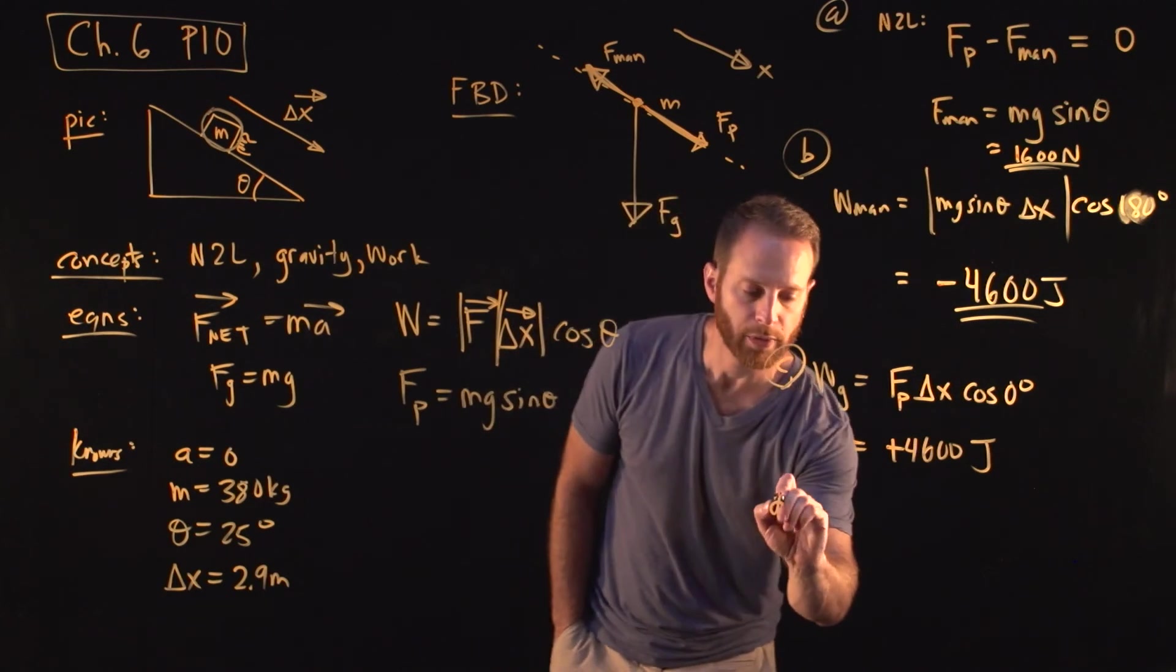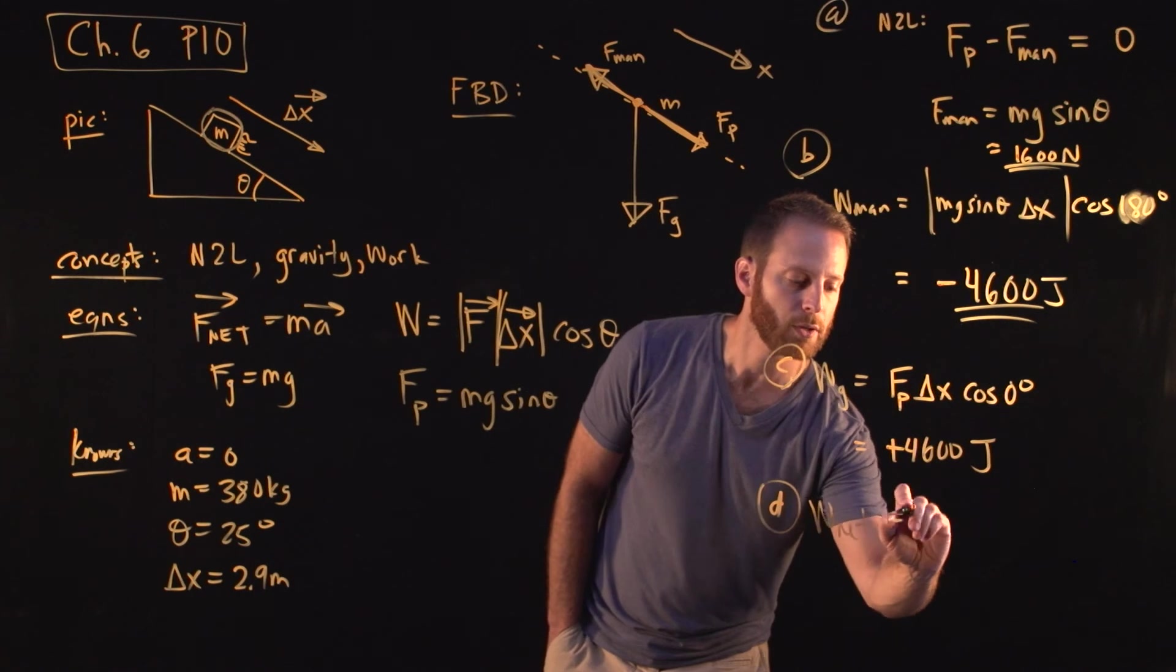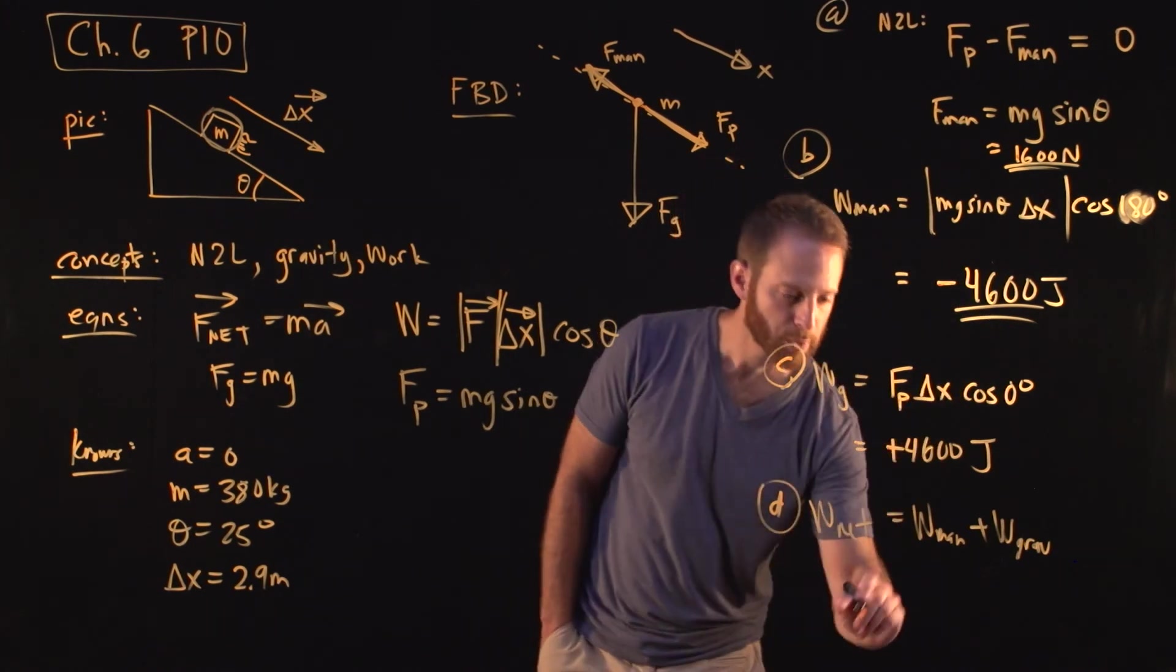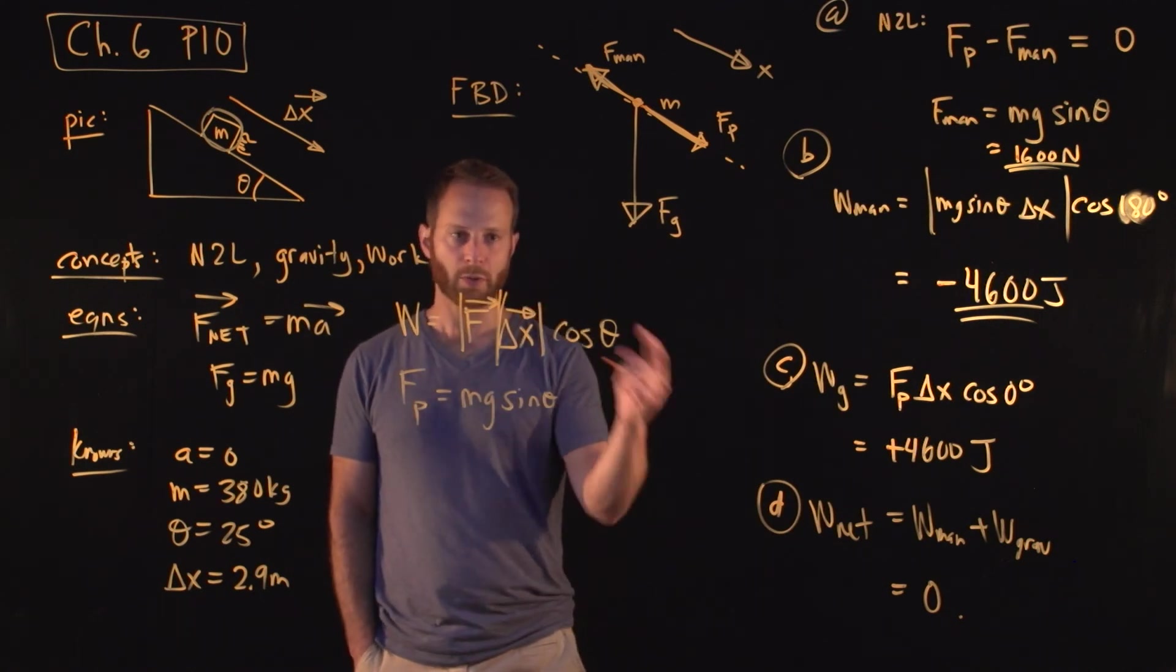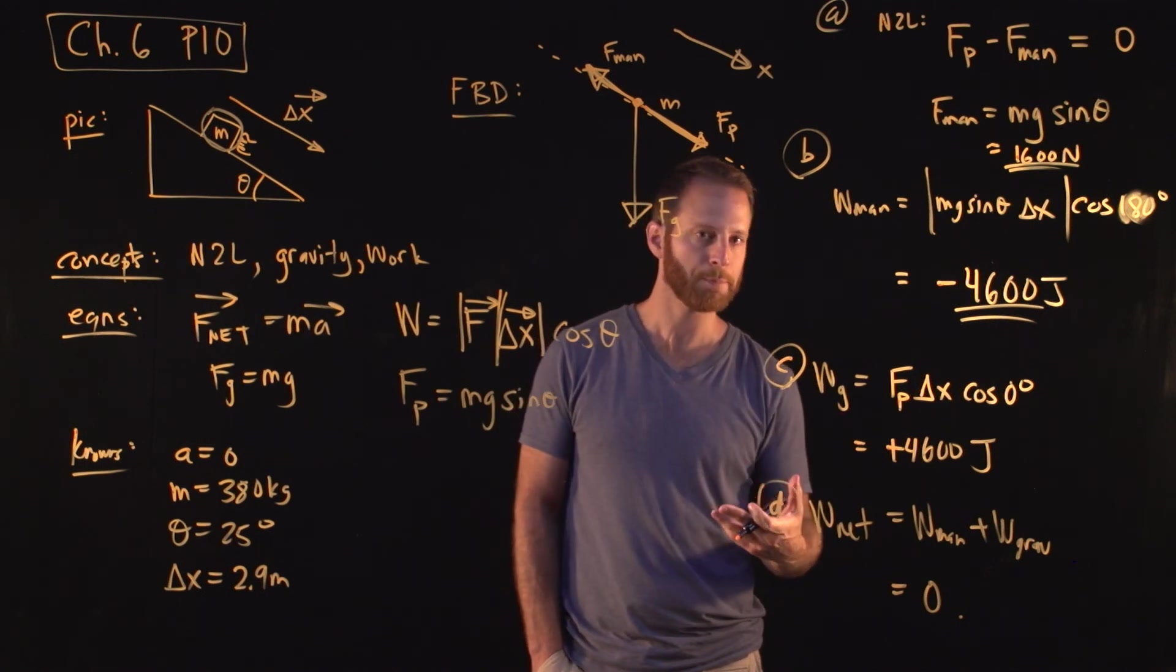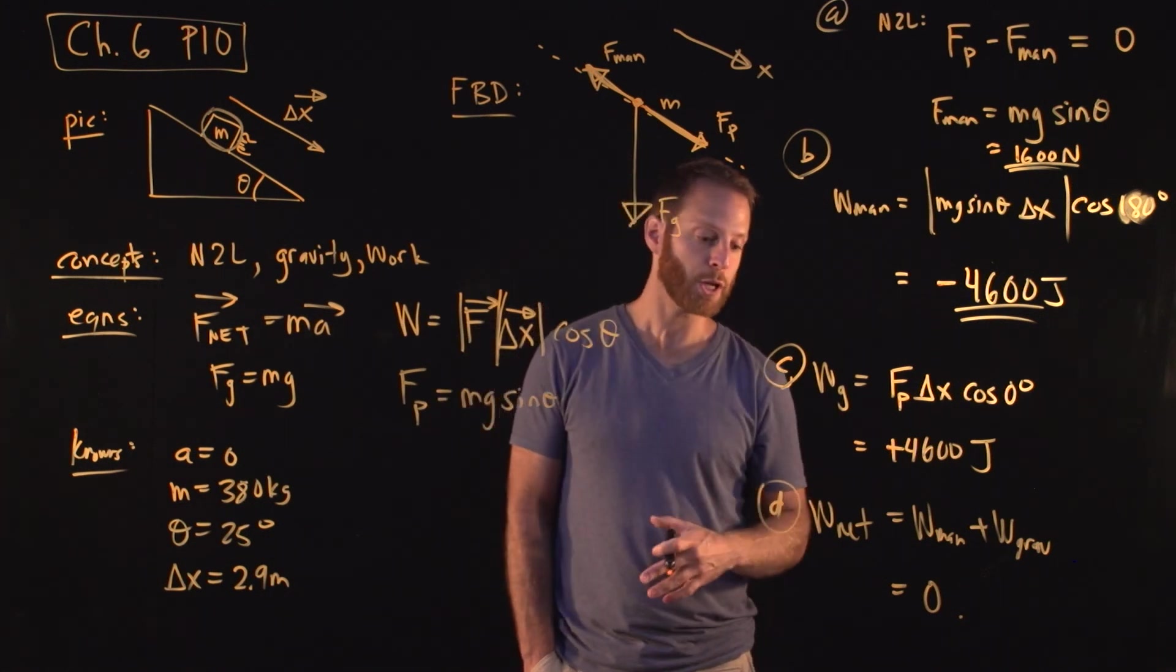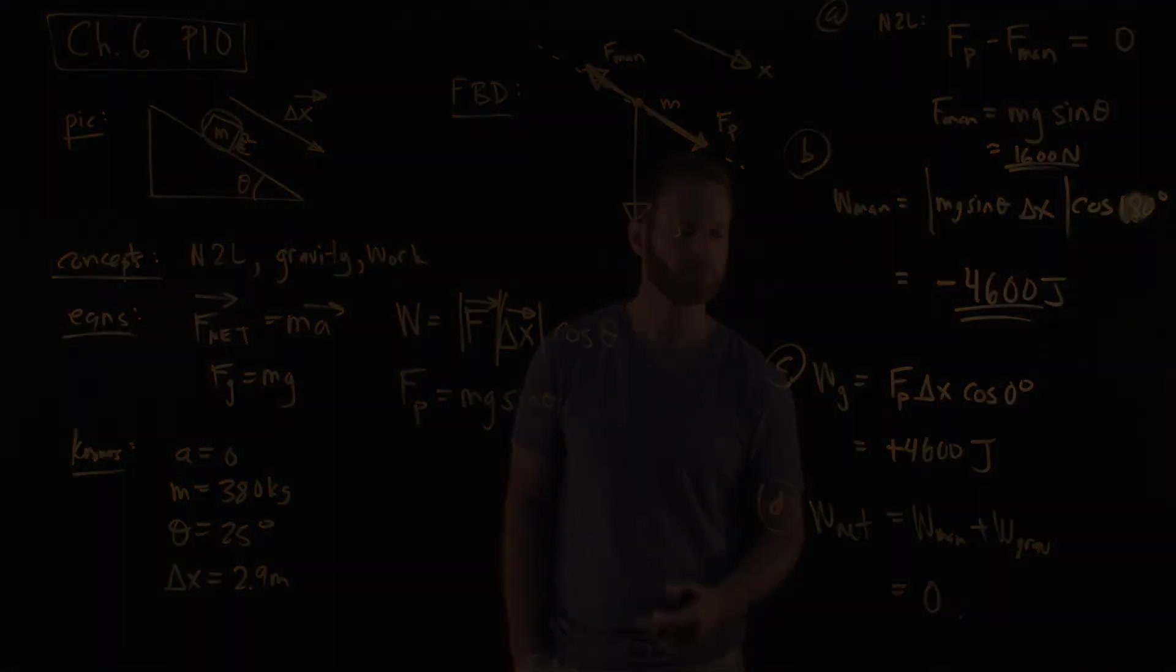And that tells you that for part D, what is the total or net force done on the piano? It's the work provided by the man plus the work provided by gravity. Negative 4,600 plus 4,600 is equal to zero. And just to confirm, there's another way to think about this: remember that the work done on a system is equal to the change in the energy. If we're told it doesn't accelerate, the piano that is, that means its speed is the same, and therefore its kinetic energy doesn't change, and so if you like, the net work done has to be zero because the energy doesn't change.